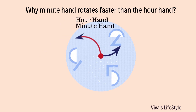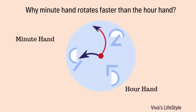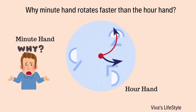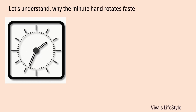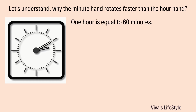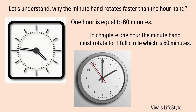So kids, you must be wondering why the minute hand rotates faster than the hour hand. Let's understand why. Well, one hour is equal to 60 minutes. To complete one hour, the minute hand must rotate for one full circle, which is 60 minutes.